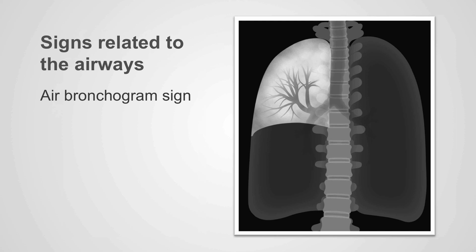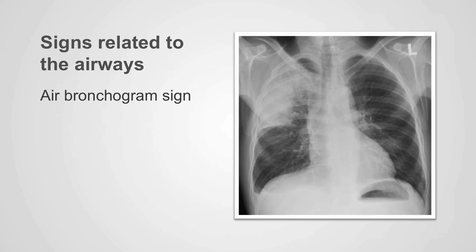This is called the air bronchogram, and depending on the clinical situation, air bronchograms can be caused by pneumonia, pulmonary contusion and bleeding, pulmonary edema, or occasionally bronchoalveolar carcinoma or lymphoma. In this example, we see opacity within the right lung, and within that opacity we can identify branching tubular black structures representing the patent bronchi in this patient with a right upper lobe pneumonia.